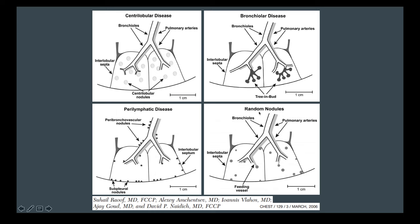Random nodules are nodules that may touch the pleura, interlobular septa, or central bronchovascular structures, but they are not clustered around those areas like in perilymphatic disease, and they don't uniformly spare them like in centrilobular disease. Random nodules have no apparent pattern because they spread via the bloodstream — hematogenously. The differential for random nodules includes metastatic disease and miliary infection, such as miliary TB.